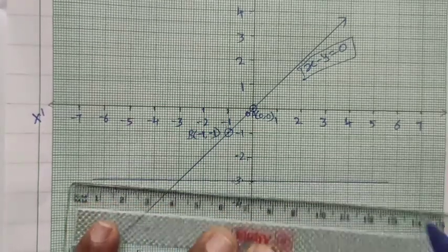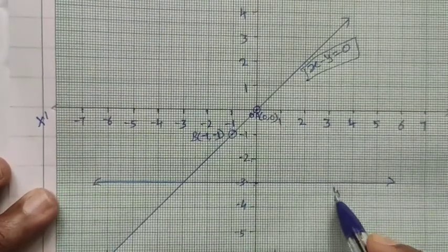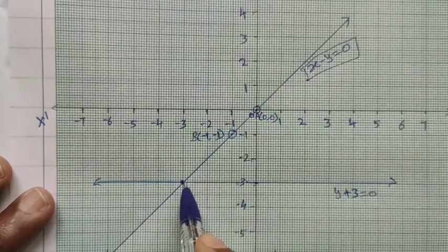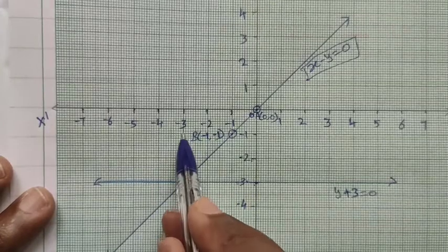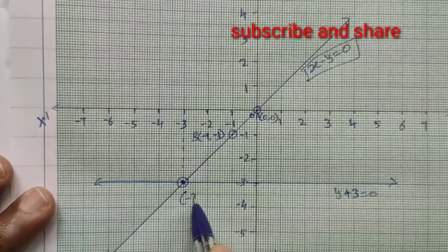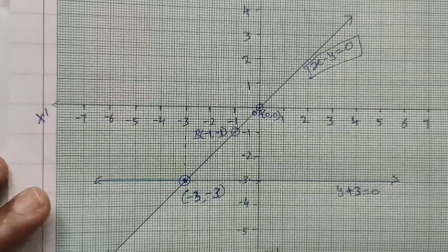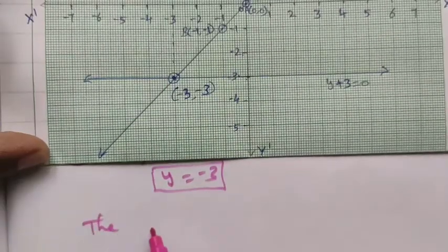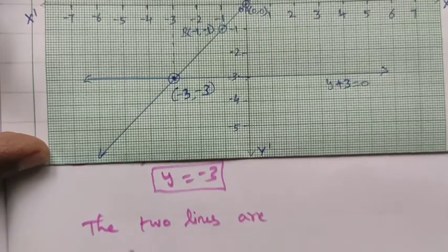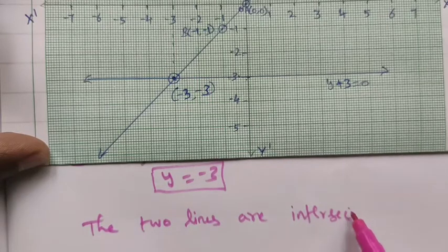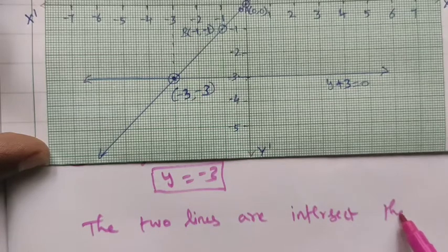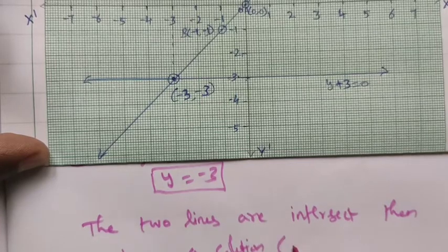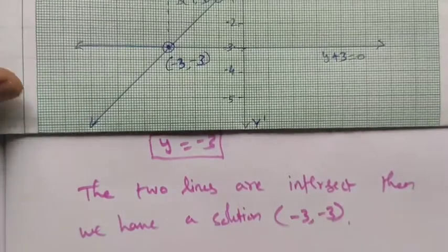The given equation y plus 3 equal to 0 can also be written as y equal to minus 3. The two straight lines intersect at point C, where both coordinates are minus 3 — the intersection point is (minus 3, minus 3). Since the two lines intersect, we get a unique solution. The solution set is minus 3 comma minus 3. Thank you, students.